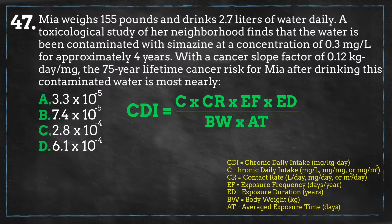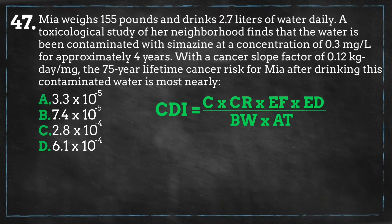CDI stands for the chronic daily intake in milligrams per kilogram day. C equals the average concentration of contaminant at exposure. CR equals the contact rate. EF equals the exposure frequency. ED equals the exposure duration. BW equals body weight. And AT equals the period over which exposure is averaged.